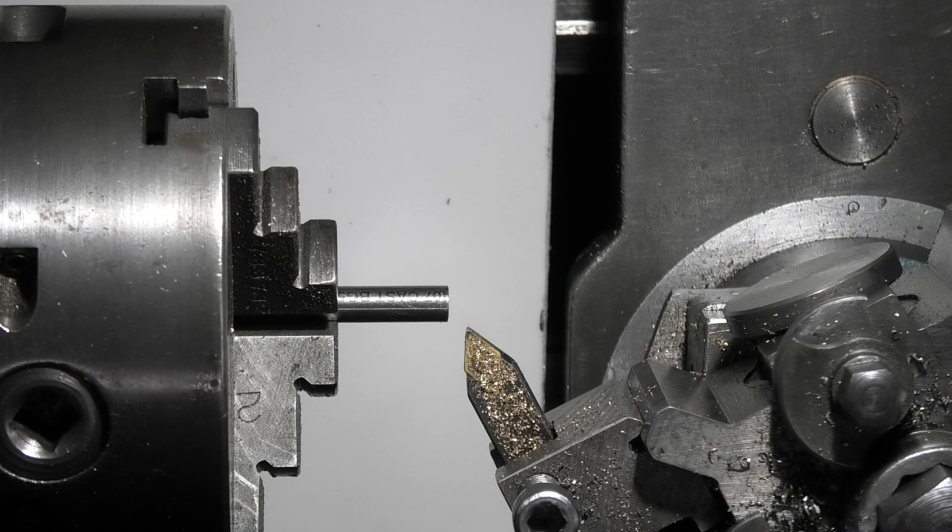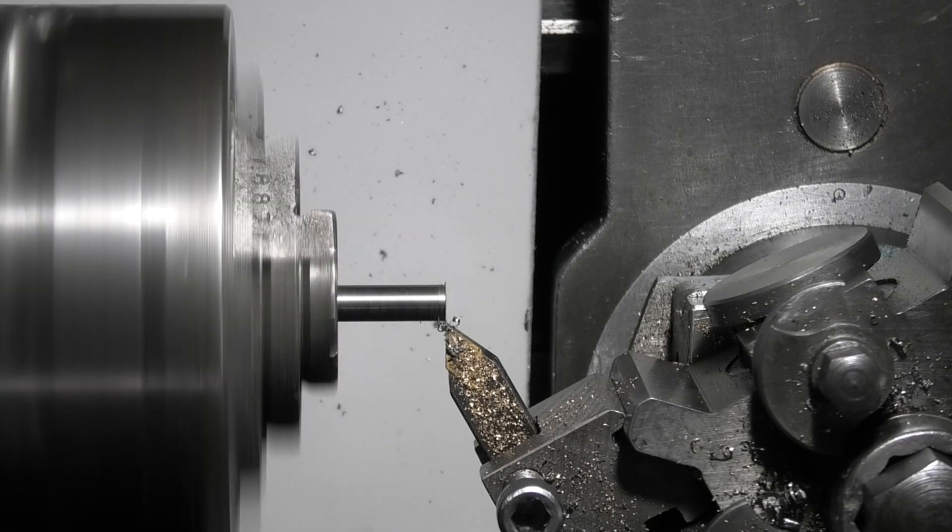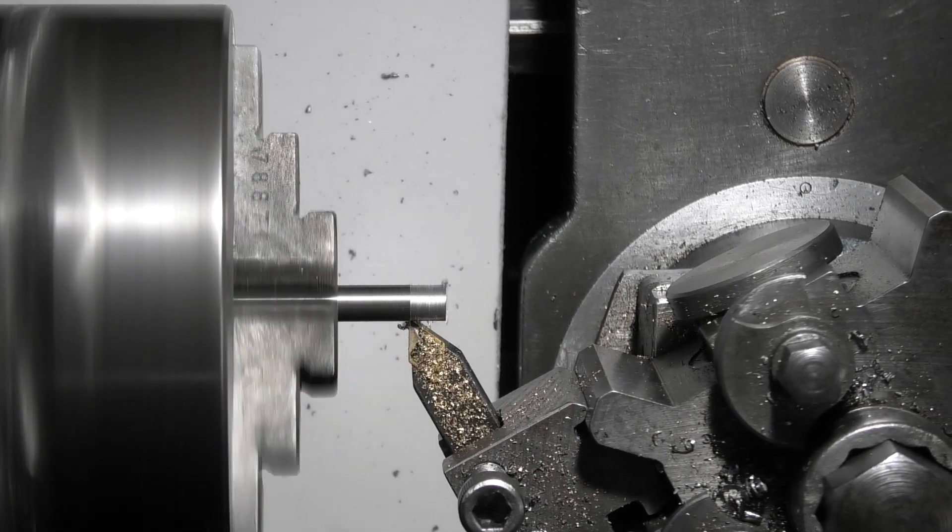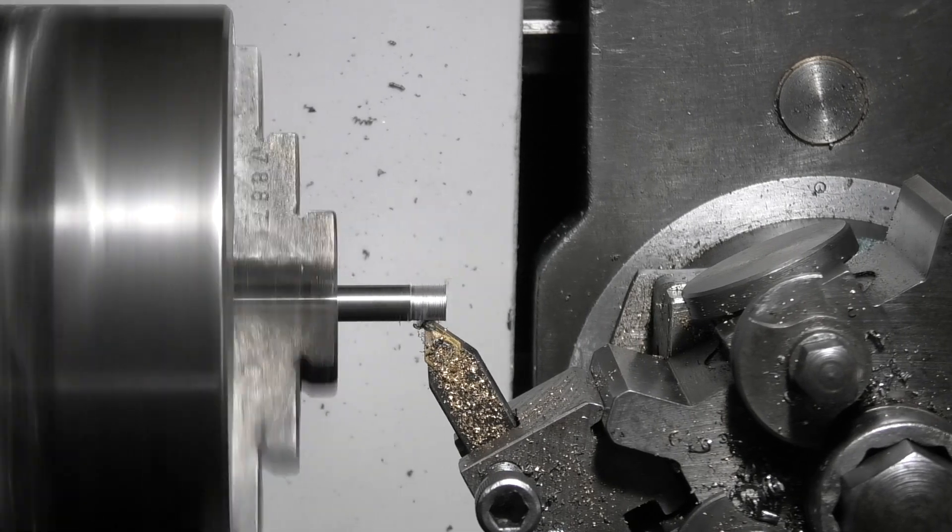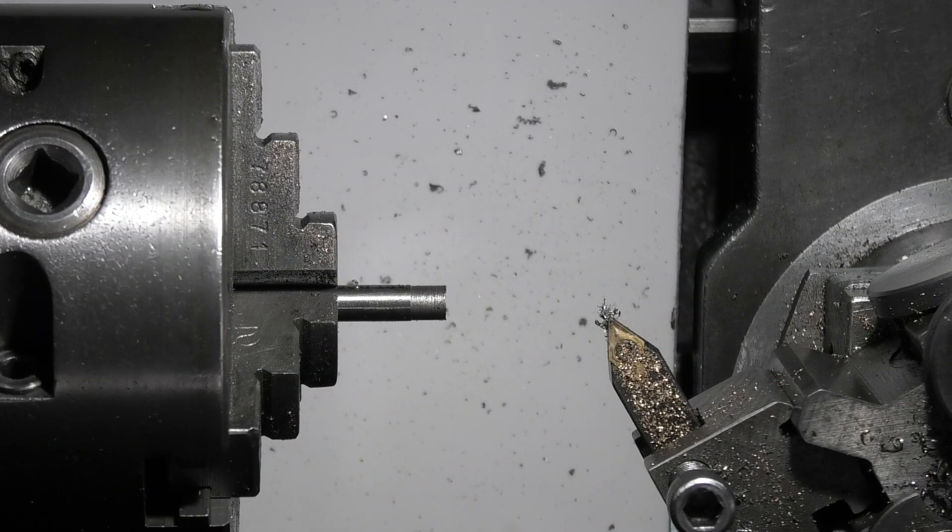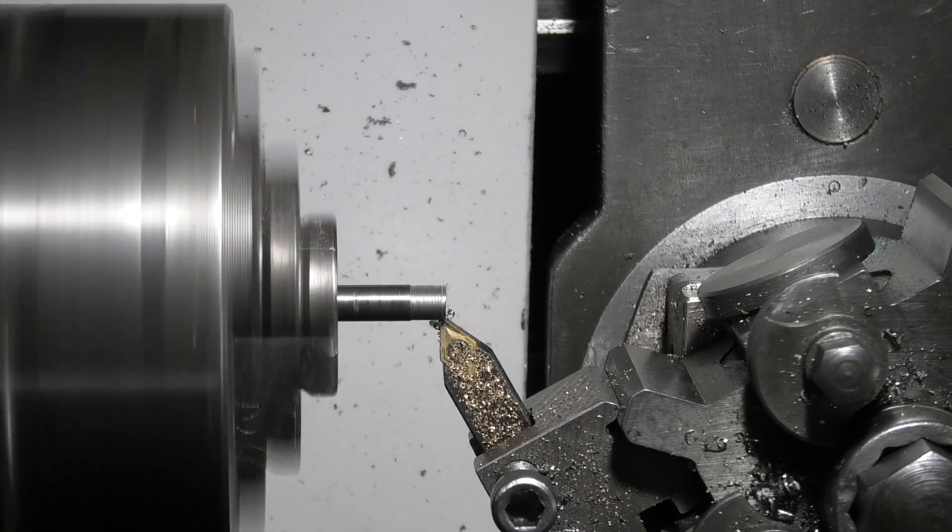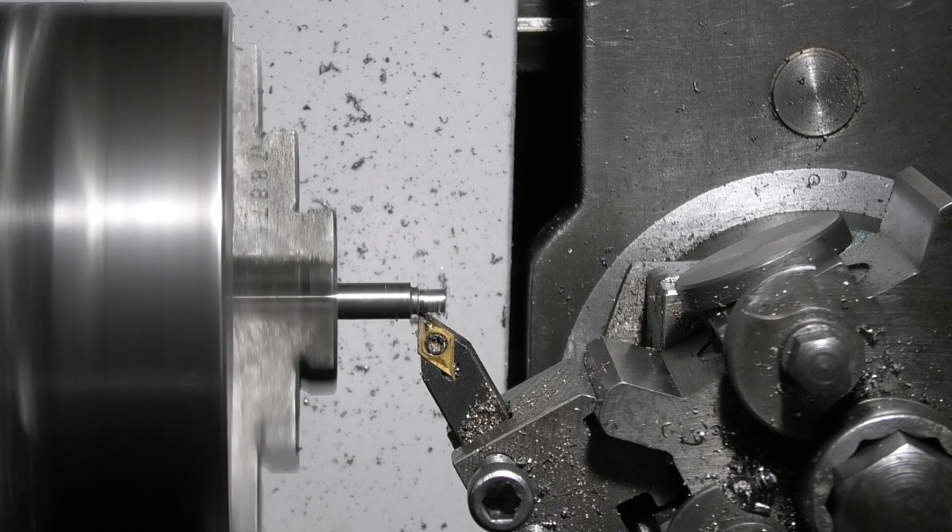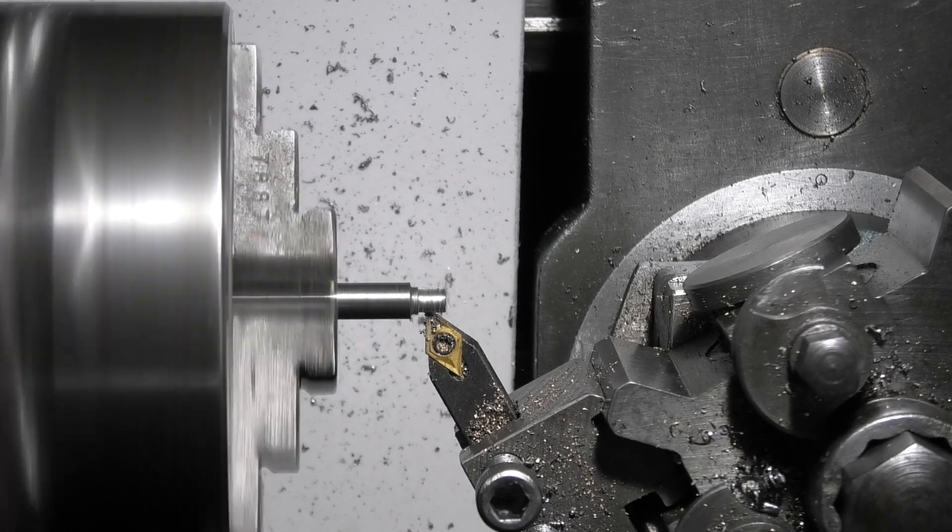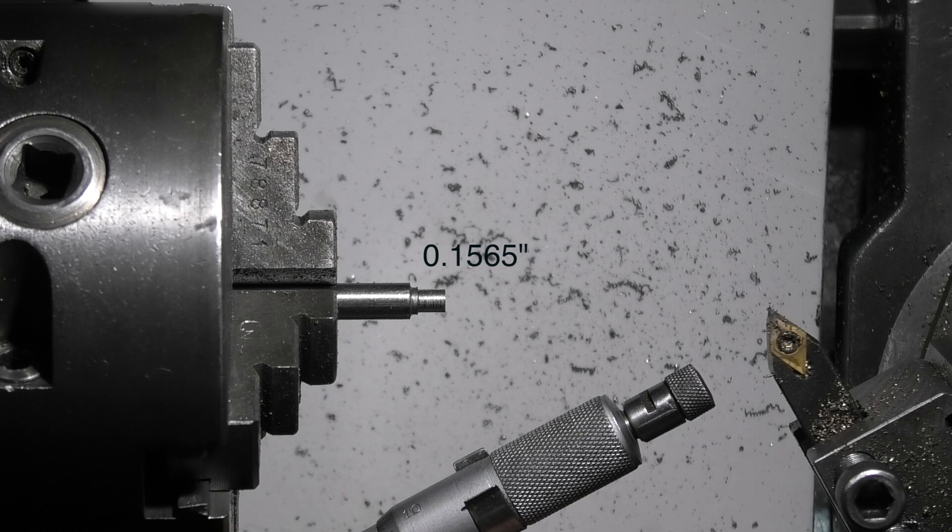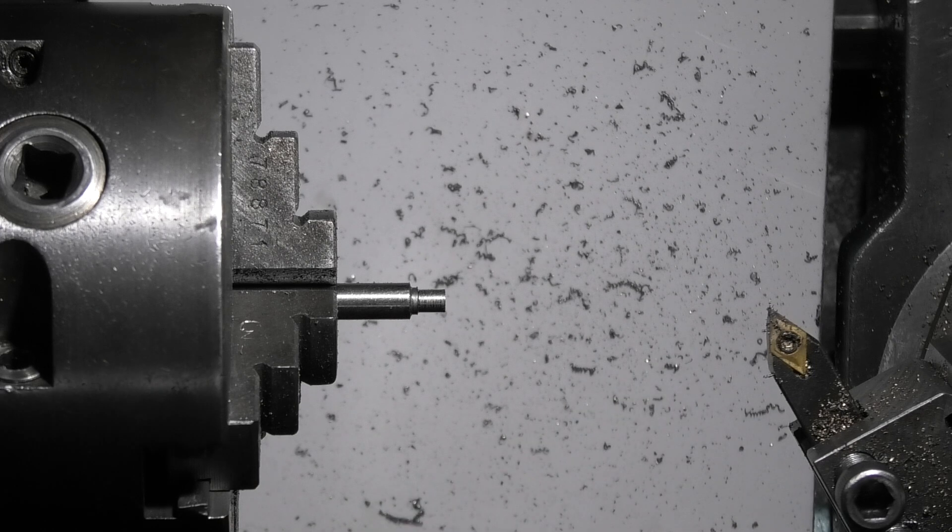We're making the depth stop rod. This is just a piece of quarter inch silver steel. The first thing to do is square the end up. I need to turn the end down to four millimeters. 156 and a half, so I'm about a thou under. So now that needs a thread putting on the end.